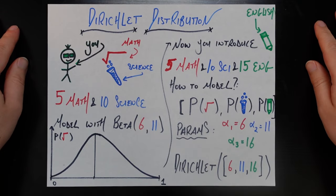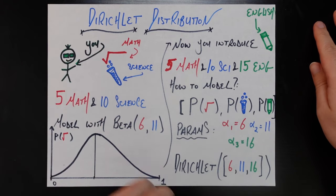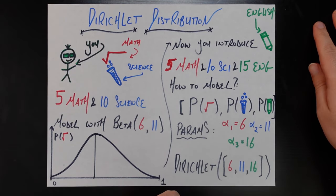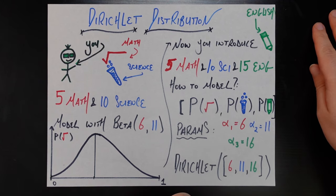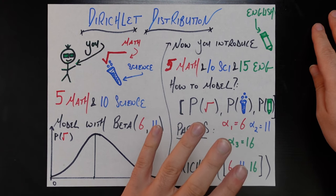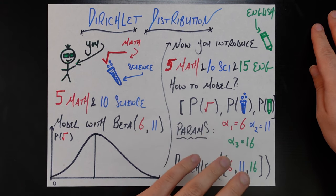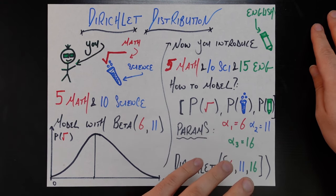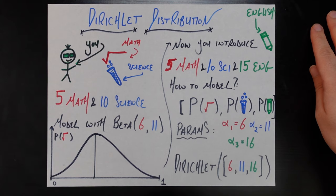Hey everybody, welcome back. Today we're going to be talking about the Dirichlet distribution. Now lucky for us, this is one of those topics in data science where it sounds complicated and the math might even look complicated, but it's actually just an extension of something we probably already know and understand, and that's going to make it a lot easier to understand. So let's set the scene as we always do with a real example.